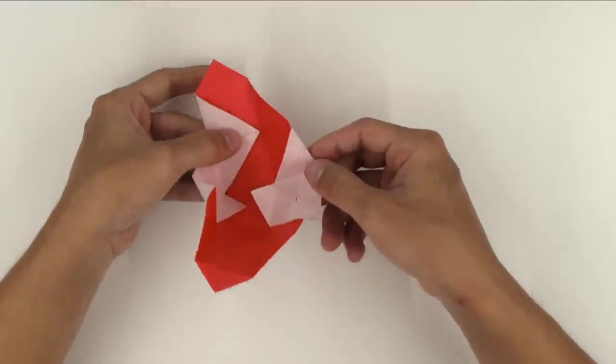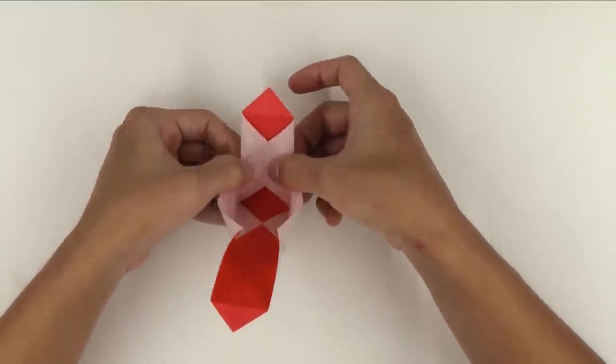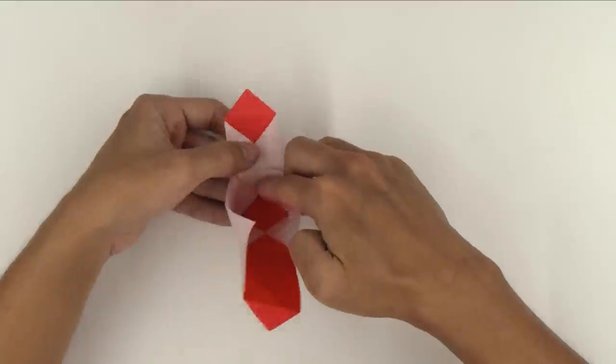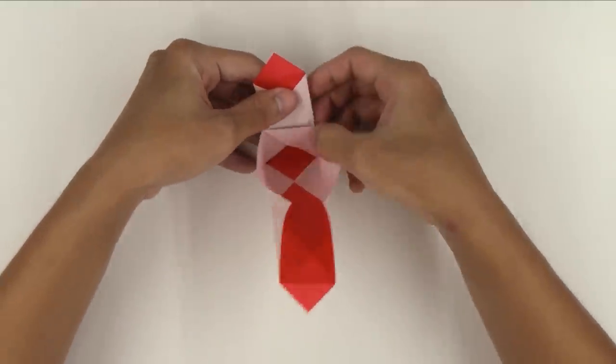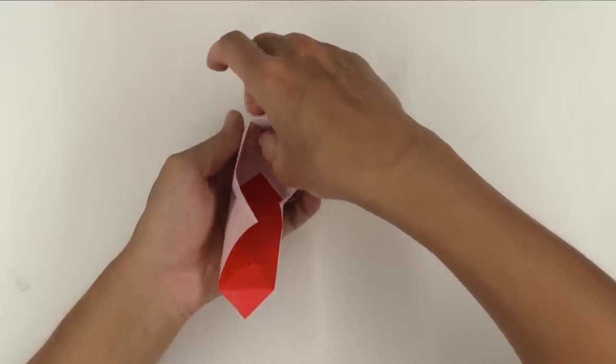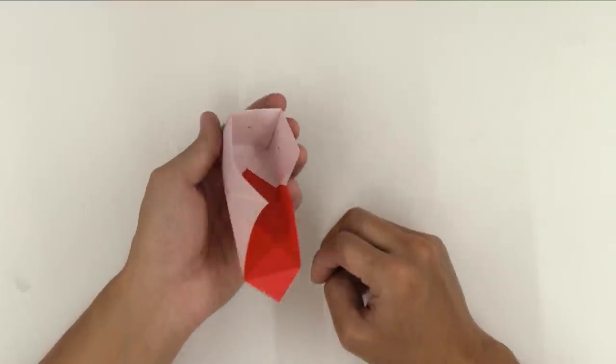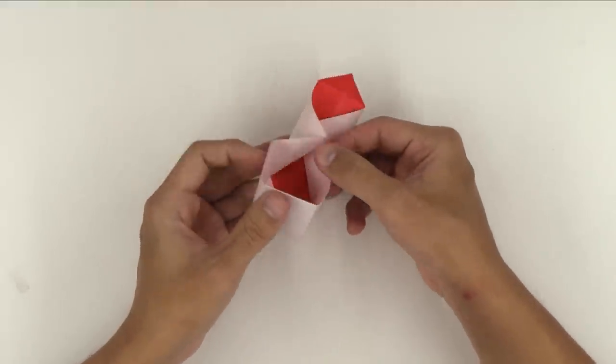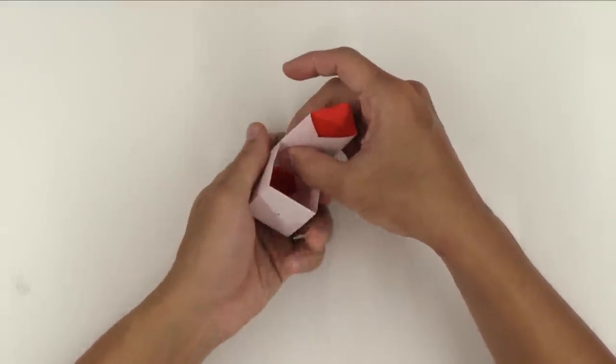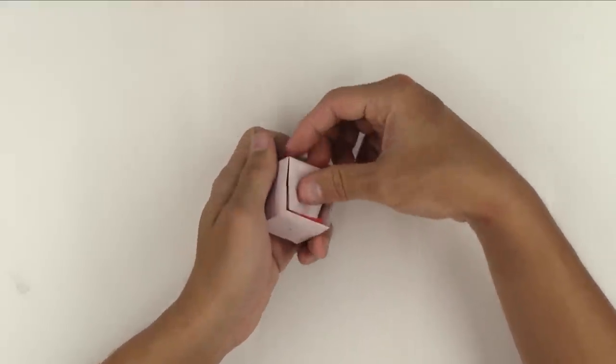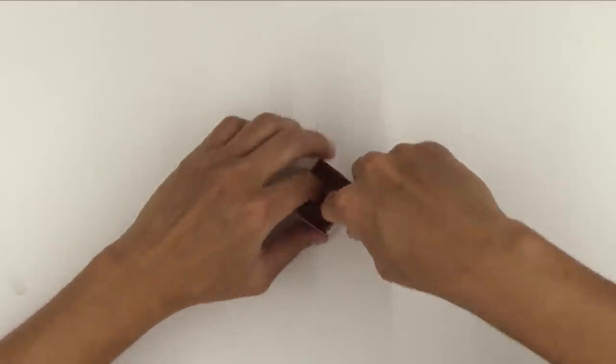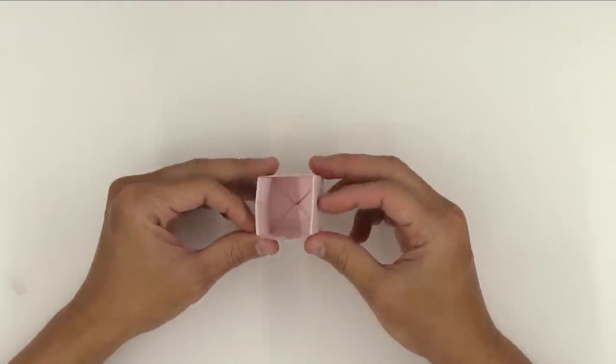Now, you're going to fold both sides at the same time. So, fold here, and then fold the other side. The model will look like this. Now, make a valley fold along this line. And do the same thing to the other side. And that's it. The box is done.